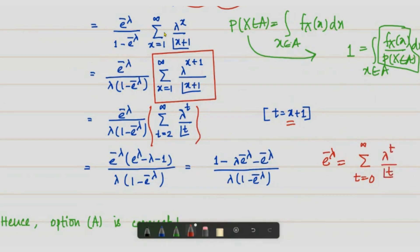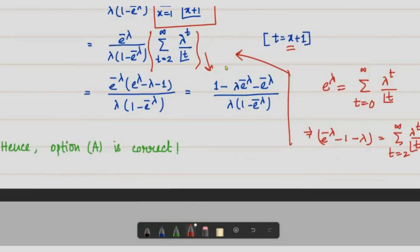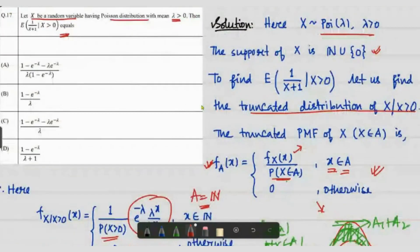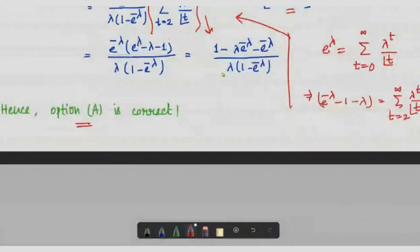By substituting t = x+1, the summation becomes the Taylor series for e^λ minus the t=0 and t=1 terms, giving e^λ − 1 − λ. After simplification, the final answer is (1 − λ − e^(−λ)) divided by (λ(1 − e^(−λ))), which matches the correct option. The main idea is to correctly write the truncated PMF and then evaluate the expectation using series manipulation.